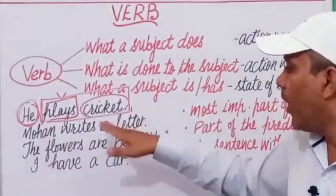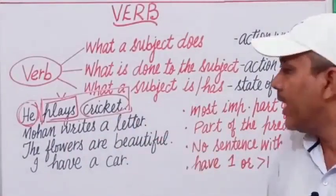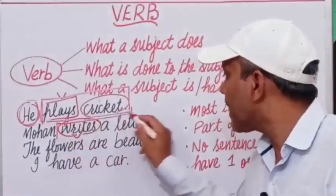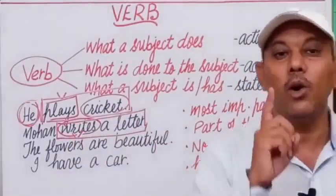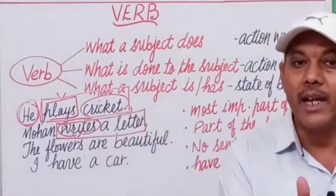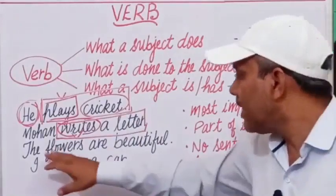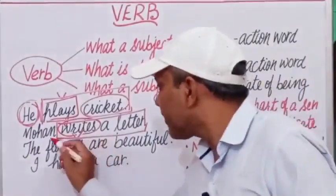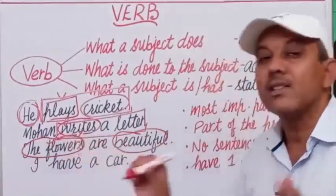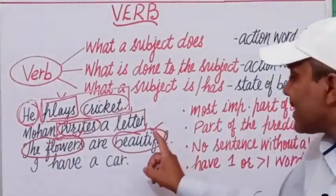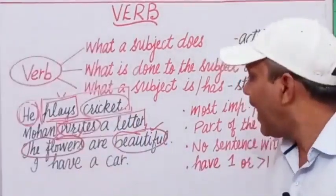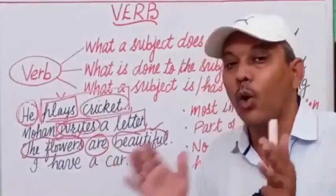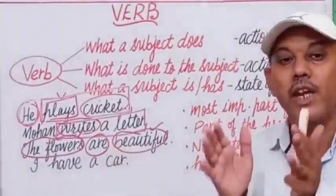Mohan writes a letter. What does Mohan do? He writes a letter — 'writes' is a verb and part of the predicate. It plays a very important role in the sentence. Third example: 'The flowers are beautiful.' Although there is no action, 'flowers' is the subject and 'beautiful' is an adjective. The word 'are' is a verb here — it tells us about the state of being of flowers.